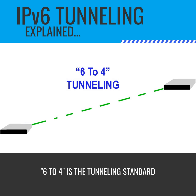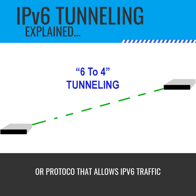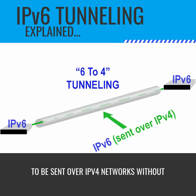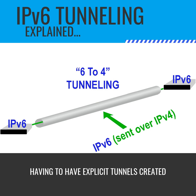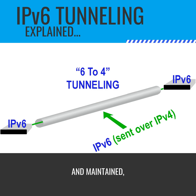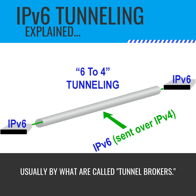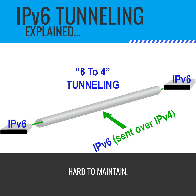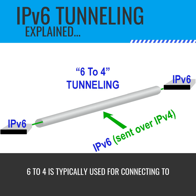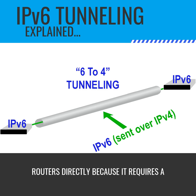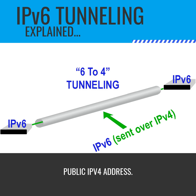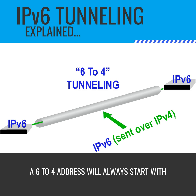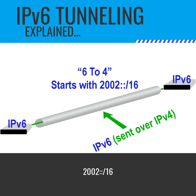6to4 is a tunneling standard or protocol that allows IPv6 traffic to be sent over IPv4 networks without having to have explicit tunnels created and maintained, usually by what are called tunnel brokers — and those can get quite expensive and hard to maintain. 6to4 is typically used for connecting two routers directly because it requires a public IPv4 address.